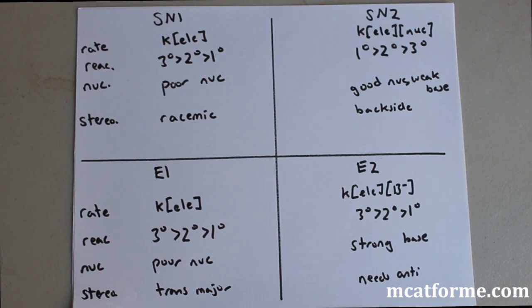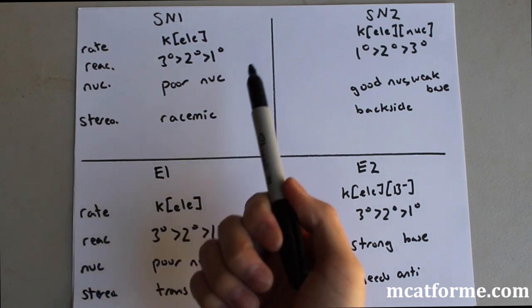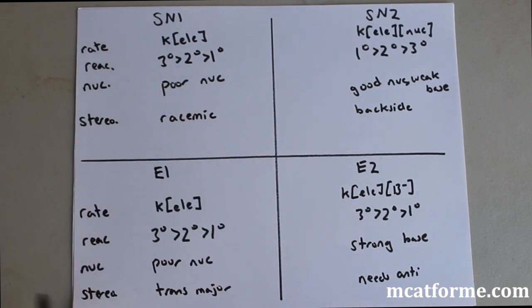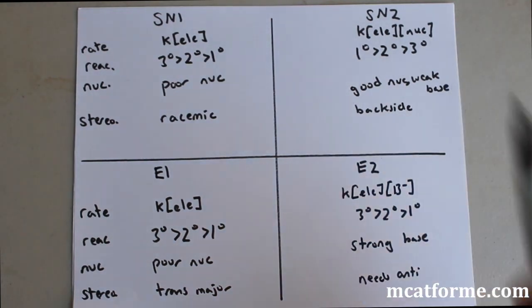In terms of rate, the rates are fairly similar. Rate for SN1 is K times the electrophile. K is just a constant and the rate is just the electrophile. Remember this is unimolecular and that's why we only have that one electrophile. In bimolecular, in substitution and elimination, we have this electrophile times the base or electrophile times the nucleophile, which are pretty much exactly the same.